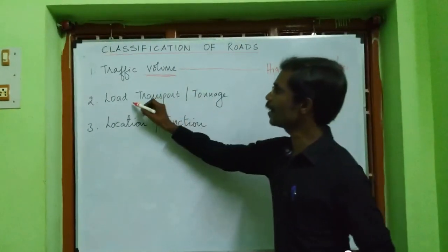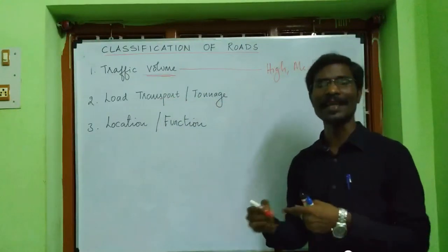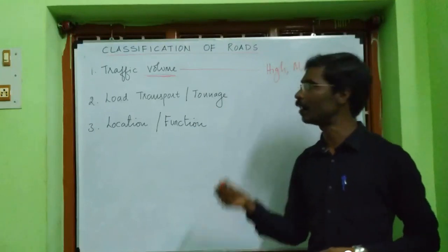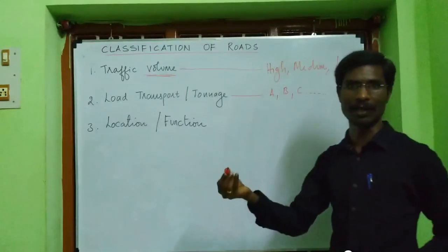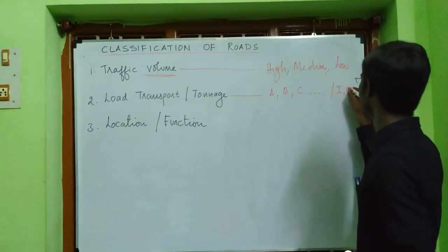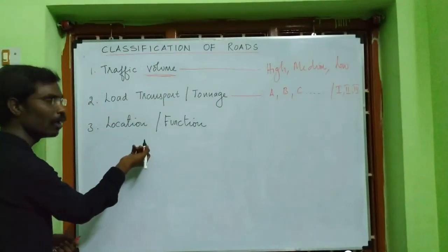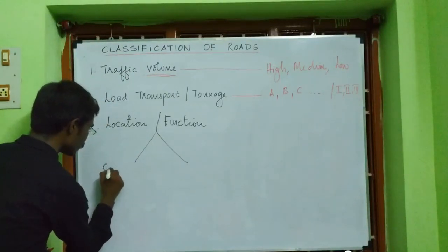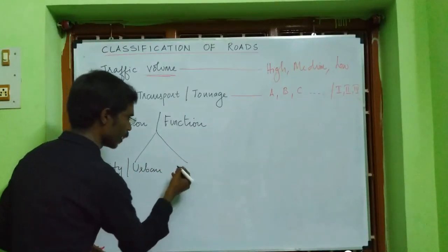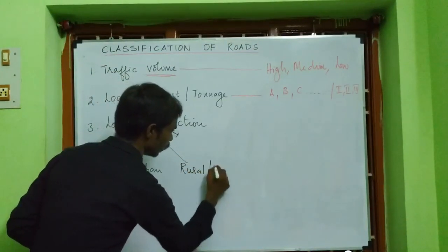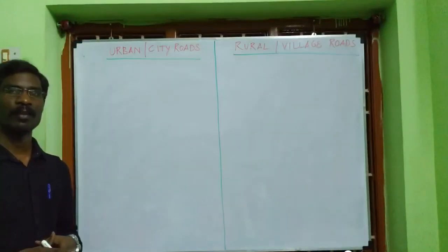Based on load transport or tonnage — that is, the carrying capacity of the road — roads can be classified as A-class, B-class, or C-class road, or as first-class, second-class, or third-class road, and so on. The location and function classification is sub-categorized into urban roads, also called city roads, and rural roads, also called village roads.